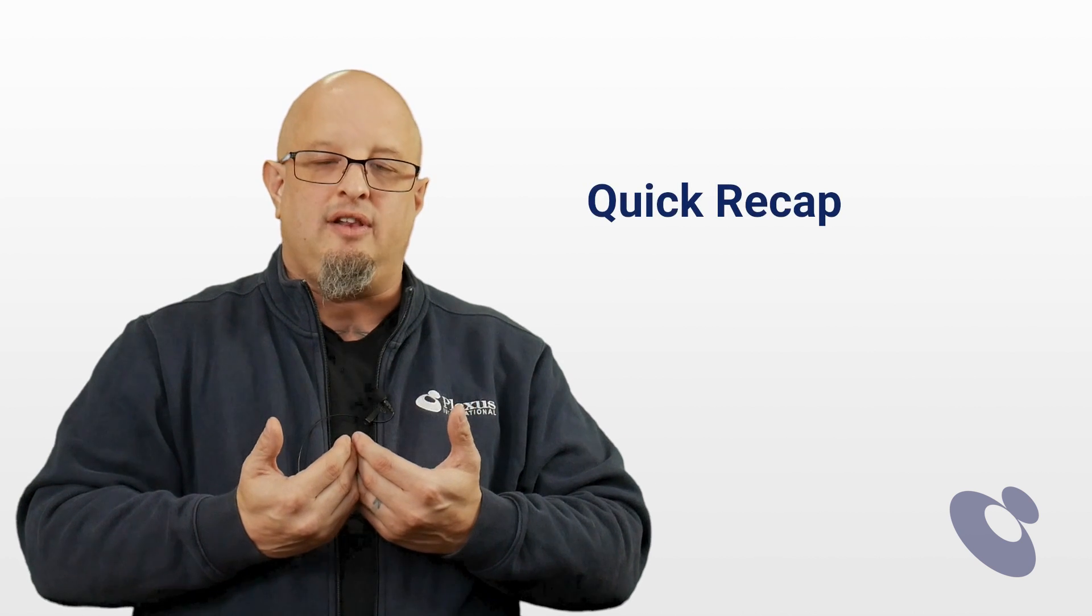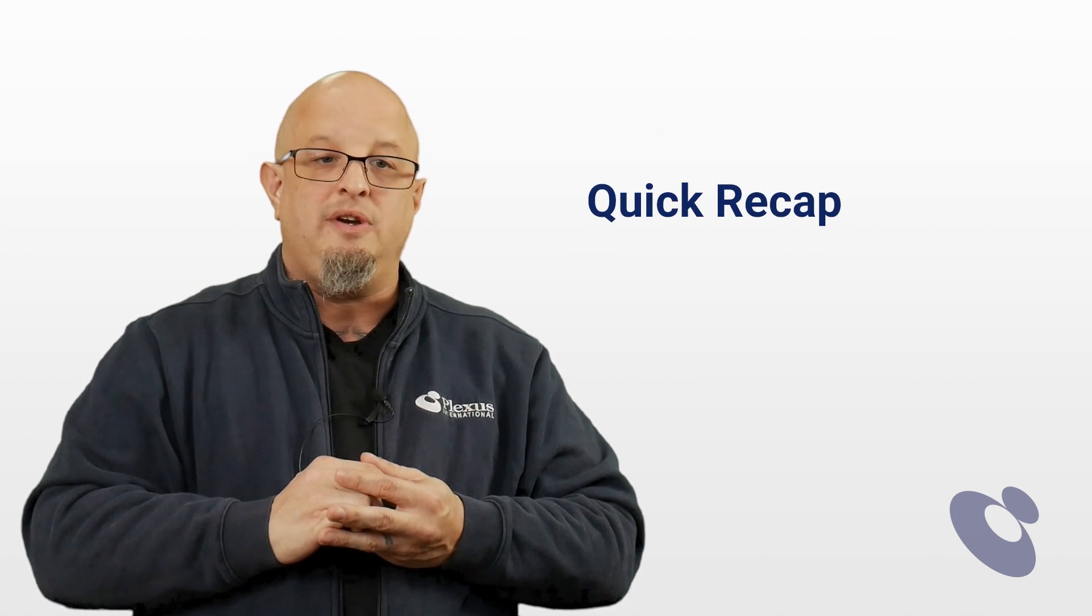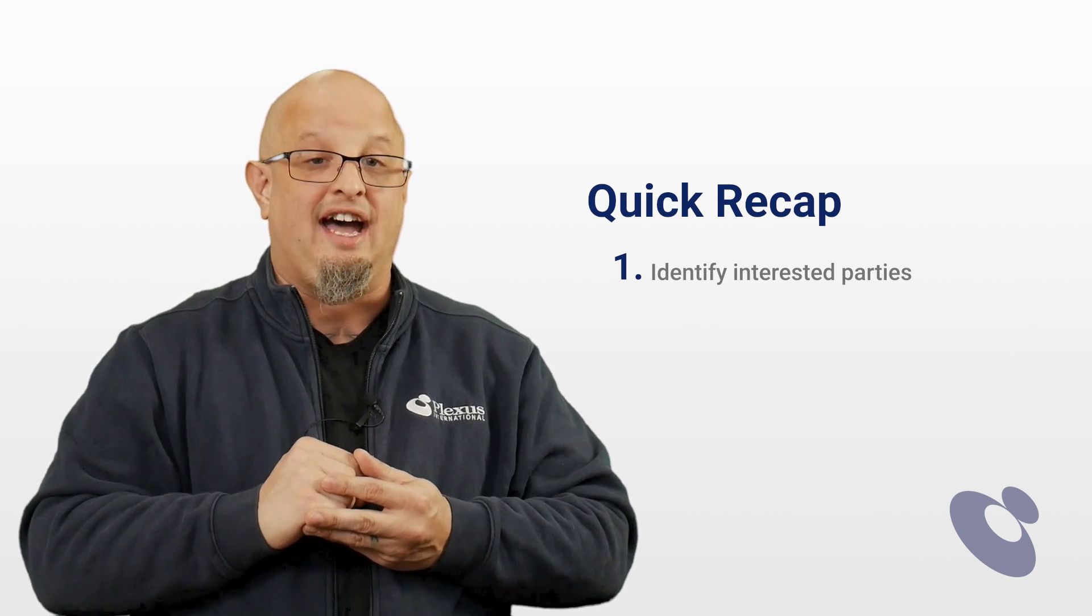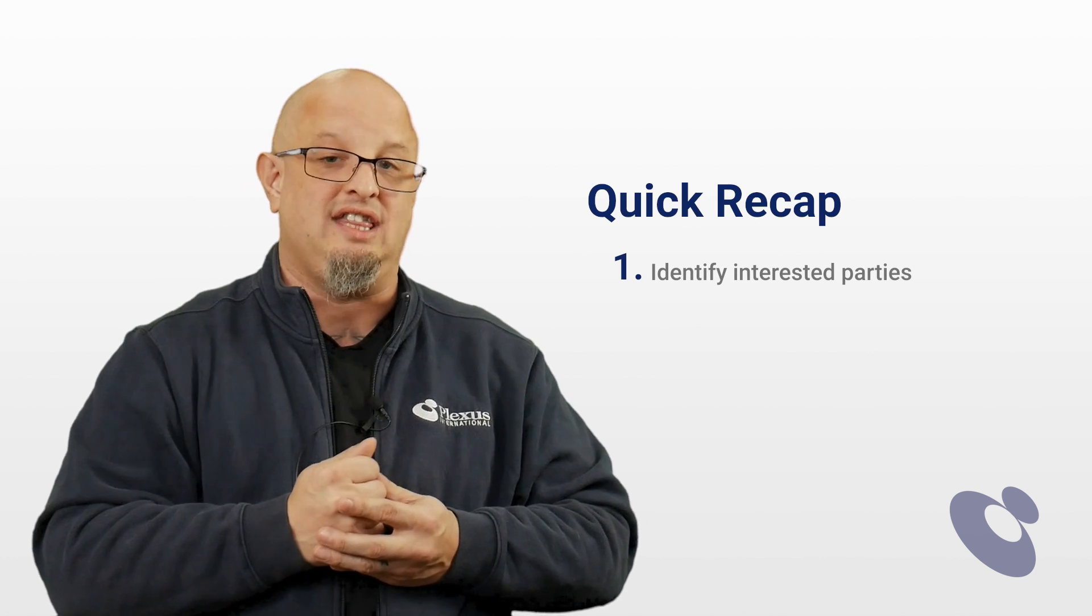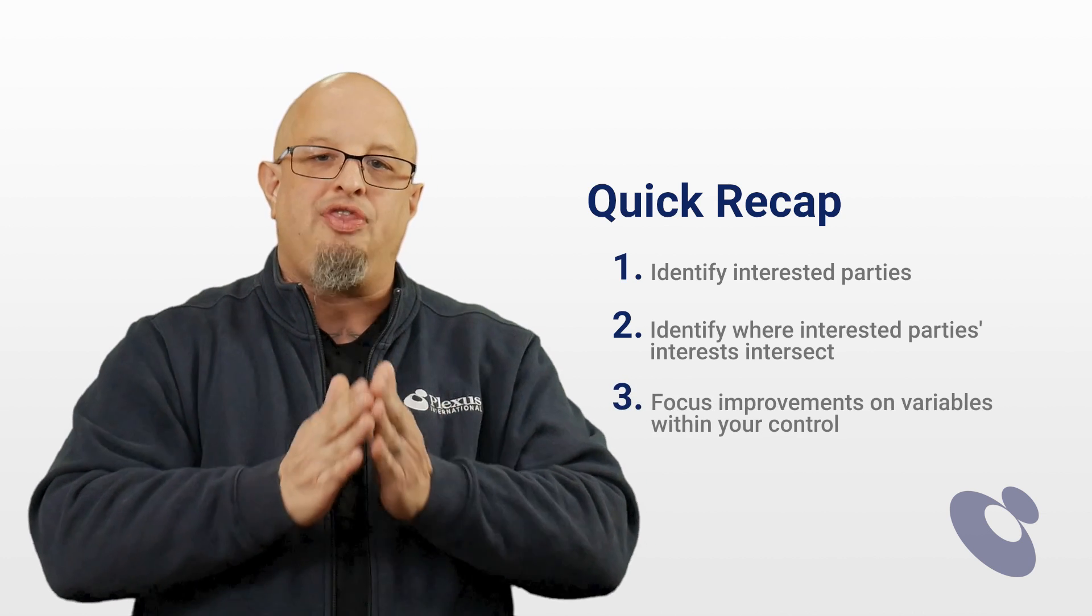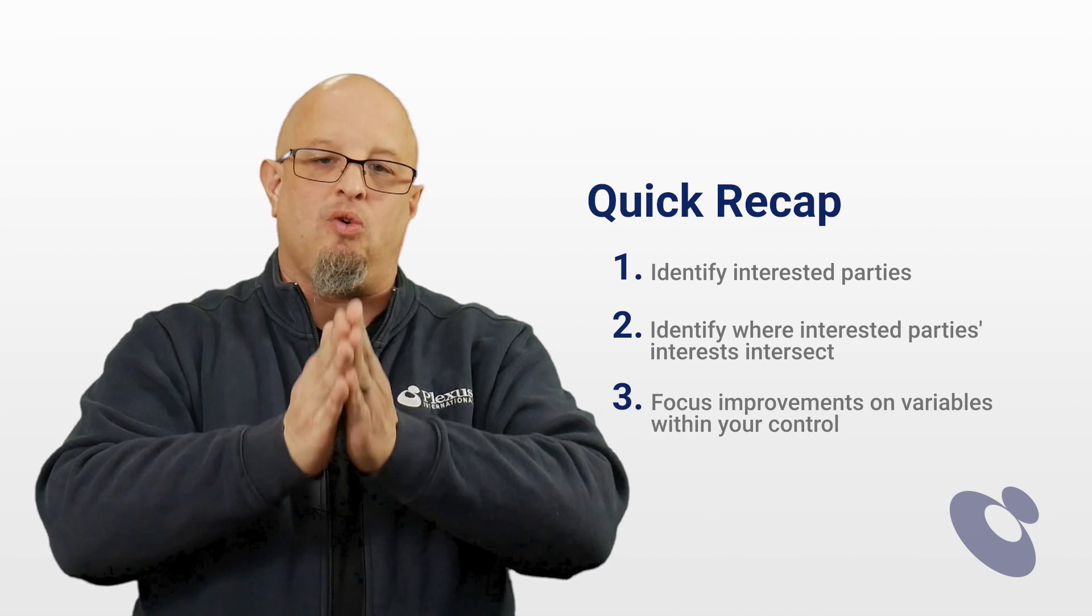So if we recap real quickly, one of the first things you're going to do when you focus on performance: you're going to identify the interested parties that actually have a vested interest in the FMEA. The second thing you're going to do, you're going to look for areas in which those three parties overlap so that you can target your audit. And the third thing you're going to do is you're going to focus your results on things that you can actually control.